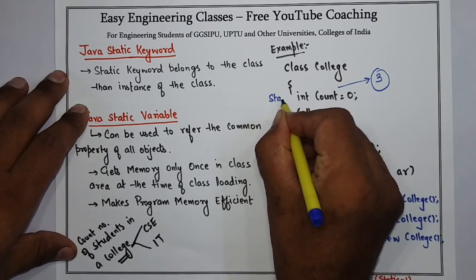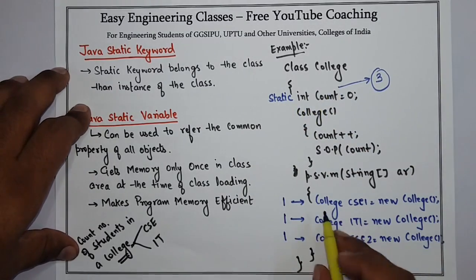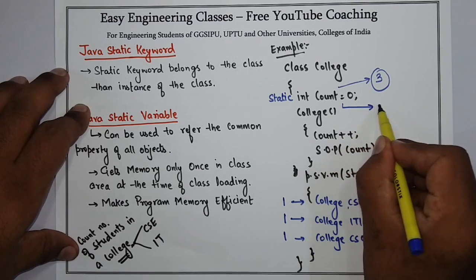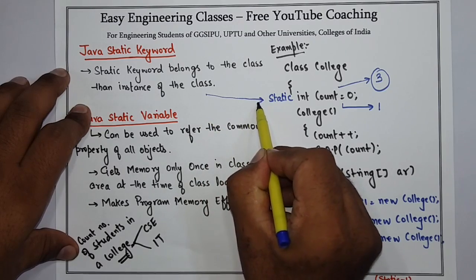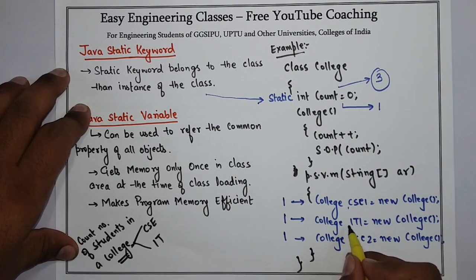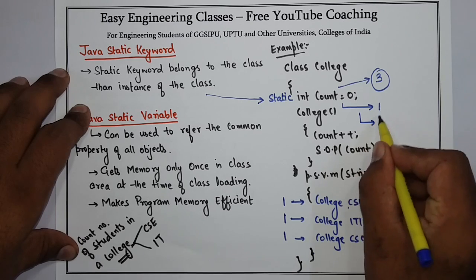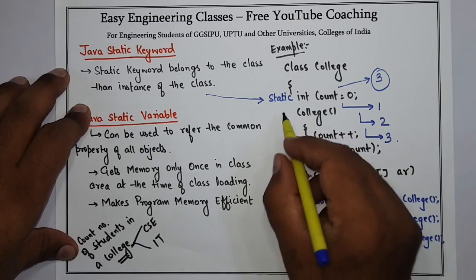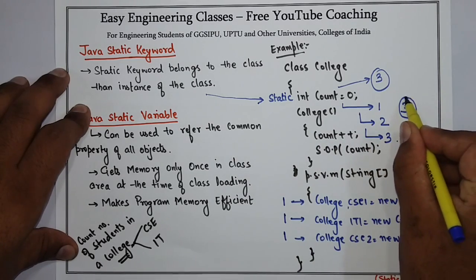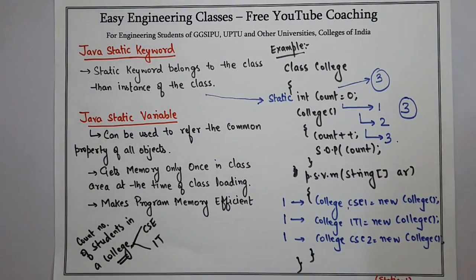If I make this keyword static, it gets memory only once. So when CSC1 gets admission, its value becomes one, and it will remain one for all the objects because static variables are class-level variables — they do not vary from object to object. When IT1 gets admission, the value becomes two, and when CSC2 gets admission again, the answer is three. So the final answer using static is: total number of students in the college are three. This is very important for theory exams or interviews — the use of the static keyword is for memory efficiency and making the variable available for the entire class.